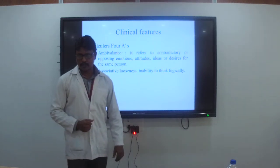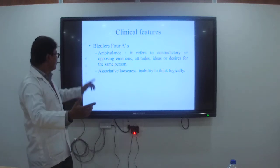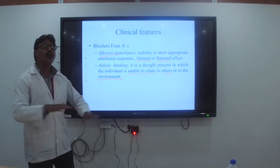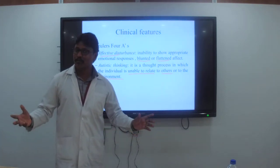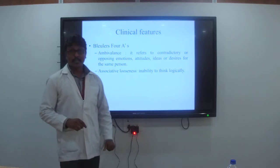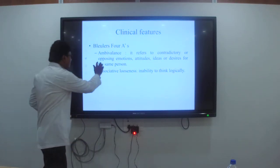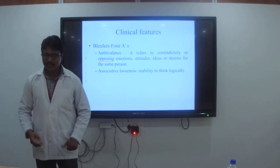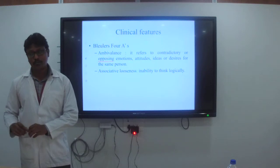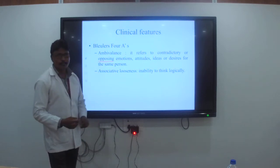The third A is Ambivalence, referring to contradictory or opposing emotions. Previously in affective disturbances, emotions were totally blunt — no response at all. But in ambivalence, there are certain signs of emotions but totally opposite ones. For example, in a situation where we are supposed to laugh, the schizophrenic patient will cry. Where we are supposed to cry, the schizophrenic patient will laugh. That is nothing but opposite emotions.